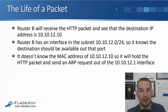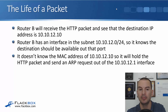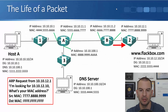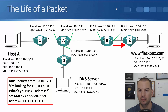Router B will receive the HTTP packet and see that the destination IP address is 10.10.12.10. Router B has an interface in the subnet 10.10.12.0/24, so it knows the destination should be available out that port, but it doesn't know the MAC address of 10.10.12.10 yet. So it will hold the HTTP packet and send an ARP request out the 10.10.12.1 interface, from source MAC 7.8.9, asking for 10.10.12.10, going to the layer 2 broadcast of ff.ff.ff.